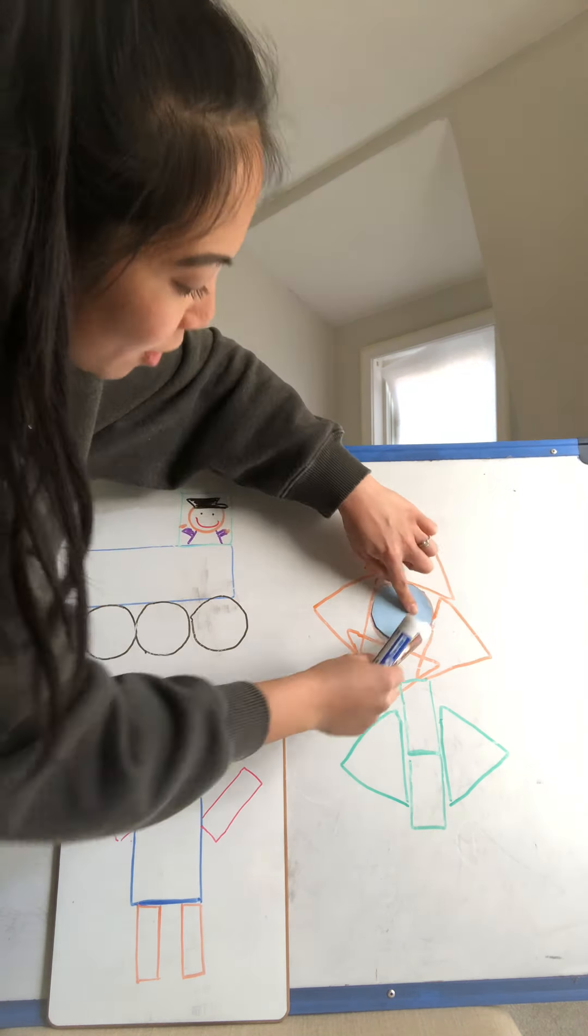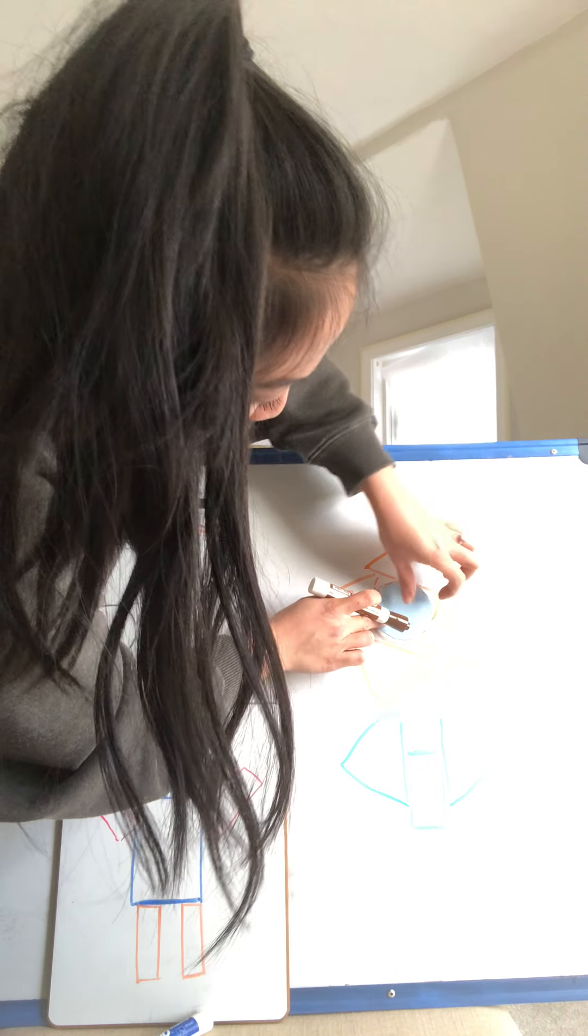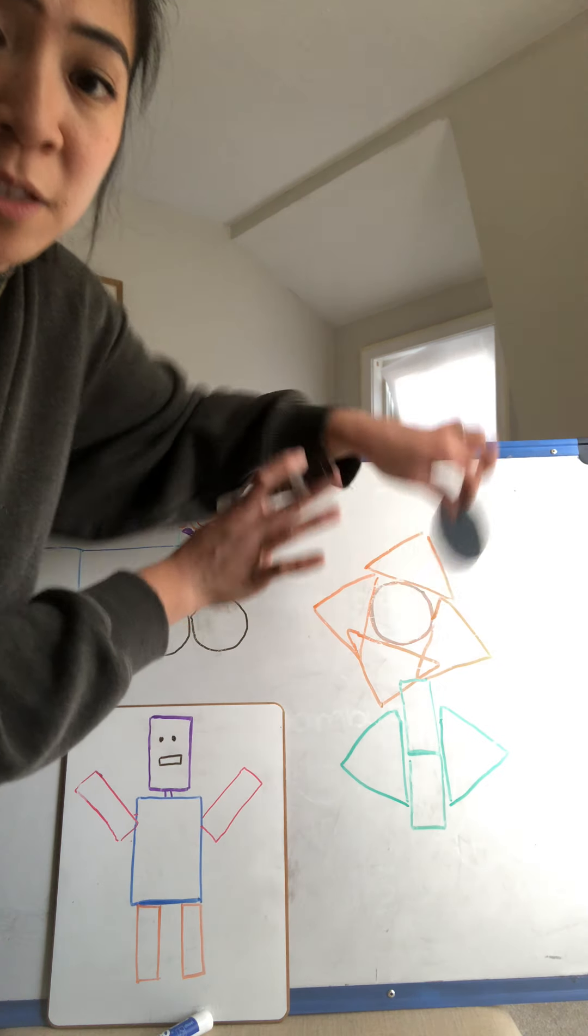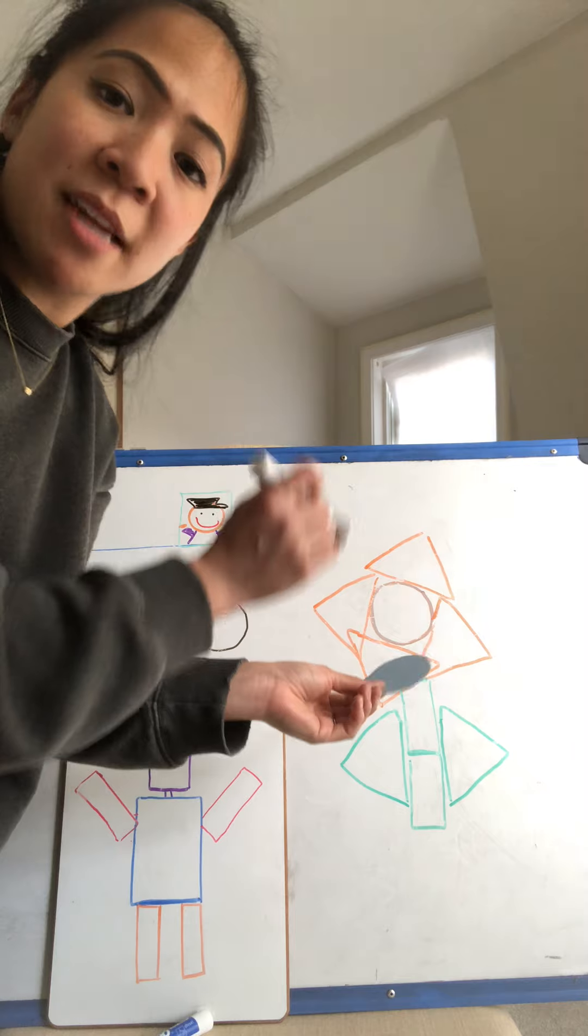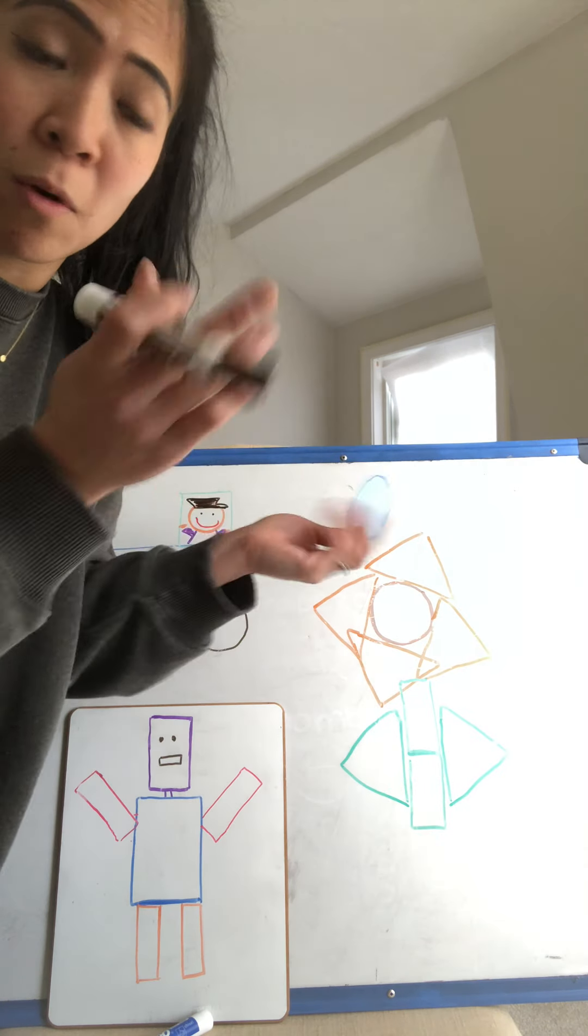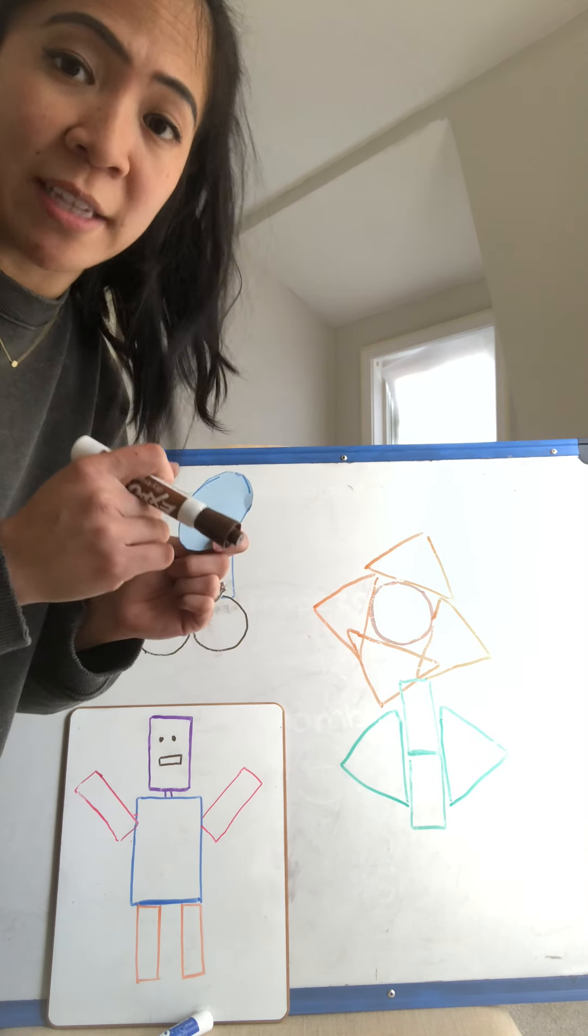And sometimes you have to move your finger too to go around all the way. Make sure you take your time when you're doing this. Go nice and slow. Because sometimes when you do too fast, the shape won't look like the shape you're trying to trace.